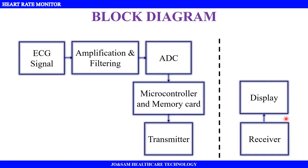We can use a transmitter and receiver. For example, we can use chest bands to measure the heart rate and display it on a smartphone. We can transmit data from the chest band and receive it via a transmitter and receiver to display on the smartphone. That is why we change the block diagram.